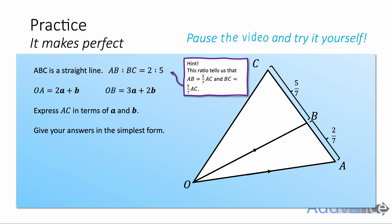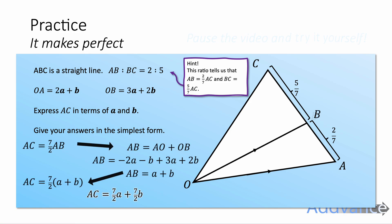But if you're ready, I'll reveal the answers in 3, 2, 1. The final answer is AC equals 7 over 2 a plus 7 over 2 b. Did you get this correct? Let me know how well you did in the comments below.